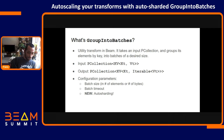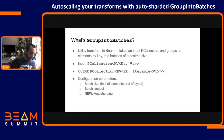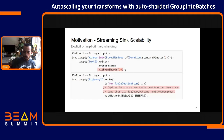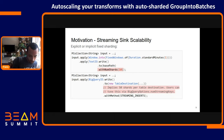Now there's something else that's interesting about this transform. There's a new feature called auto sharding. This has been recently implemented for Dataflow, and the API was added to Beam so that if other runners start supporting it, it will also work on those other runners.